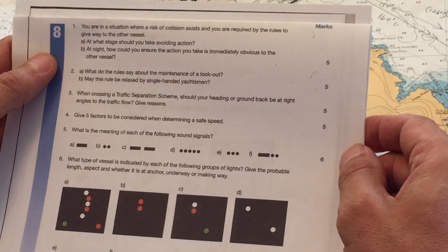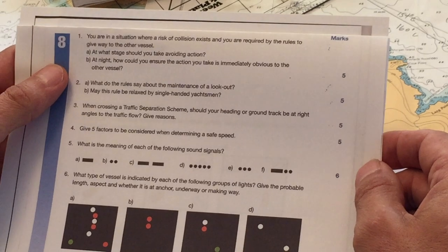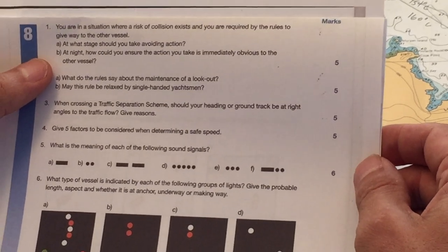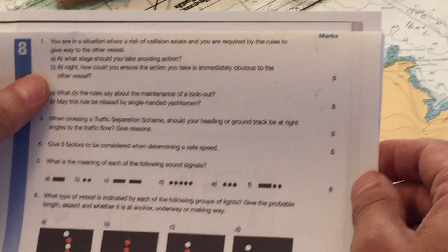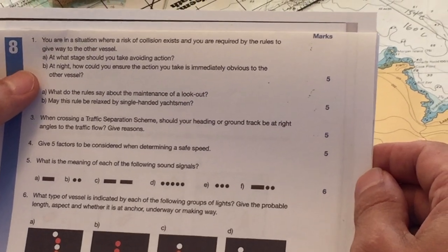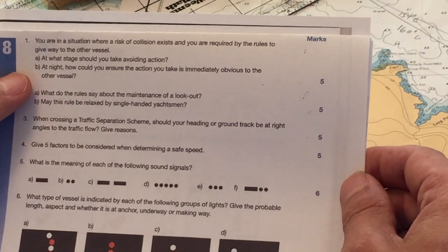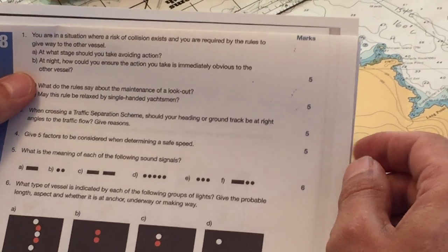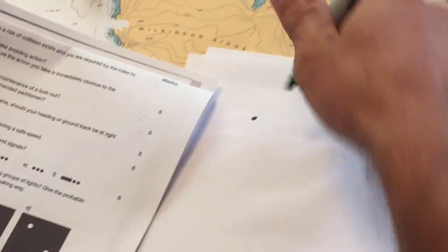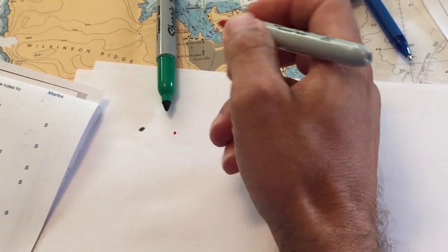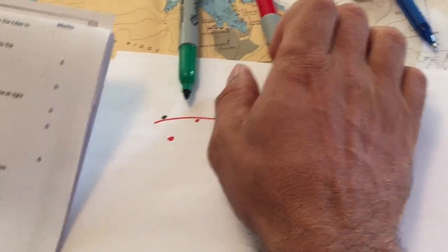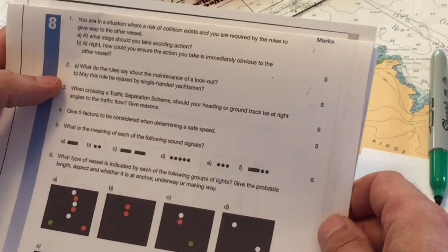You are in a situation where risk of collision exists and you are required by the rules to give way to the other vessel. At what stage should you take avoiding action? Immediately, immediately take avoiding action. And make your alteration, your change in course, whatever it is, make it extremely obvious to the other vessel. At night, how could you ensure the action you take is immediately obvious to the other vessel? Well, if the other vessel, for example, is seeing your nav lights, and let's say you're dead ahead, make enough of a change so that all he sees is one of your lights. And then he'll know for sure that you've changed course.